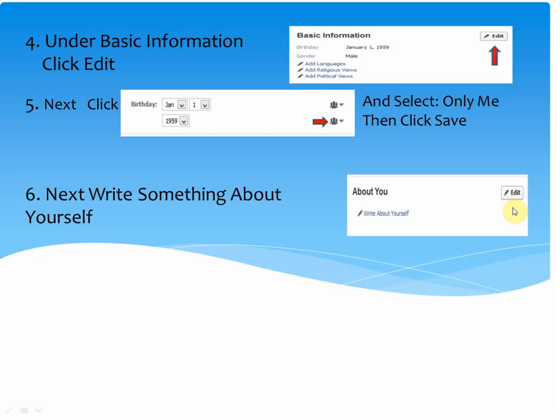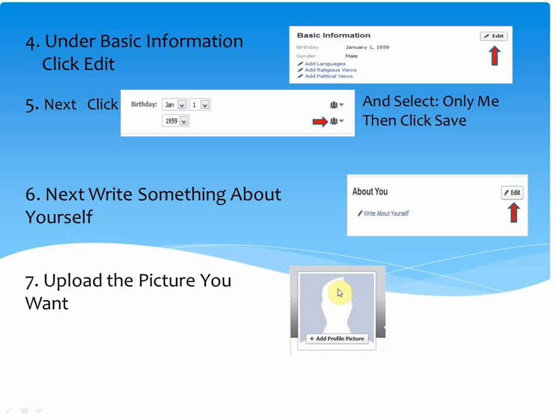After that, you're going to go down and find where it says About You, and you're going to click on Edit and write something about yourself or your business that you want people to see. Then you're going to go back to the top of the page, where you're going to upload a picture. You'll click on Add Profile Picture, which will bring you to a screen where you can browse your computer and find the photo that you want to upload.